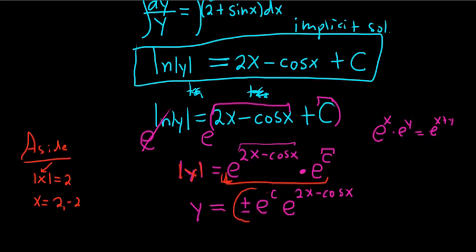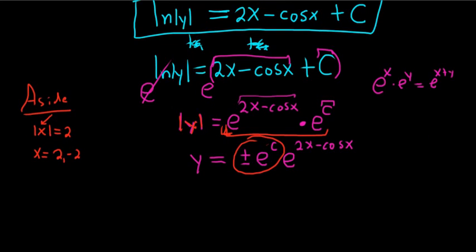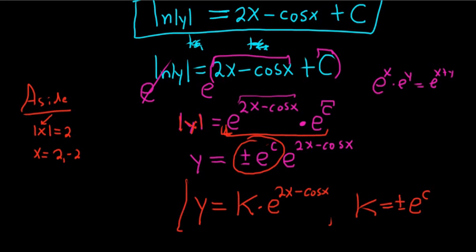At this point, we can rename our arbitrary constant. You can call this whatever you want, but just don't call it c because we've already used c. I'm going to call it k. You're allowed to rename constants. So this is k times e to the 2x minus cosine x. And if you want to be specific, you can tell the reader what your k is. So k is plus or minus e to the c. And so that would be the final answer to the differential equation.